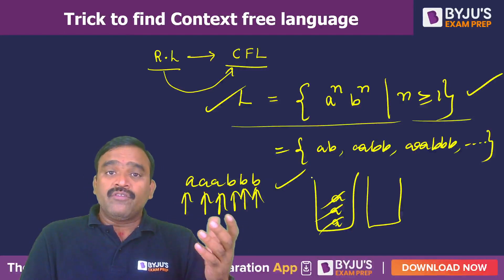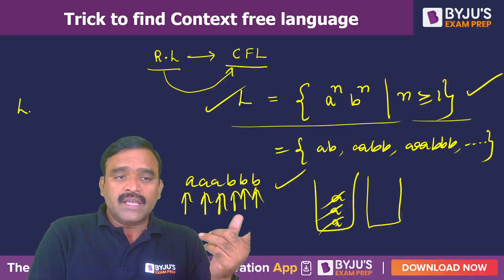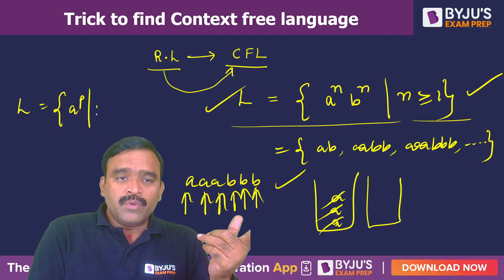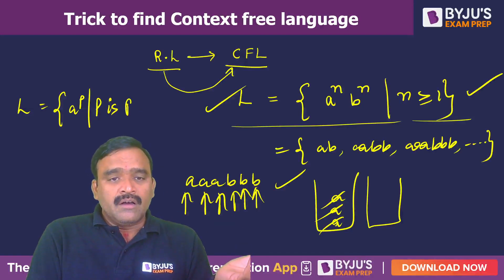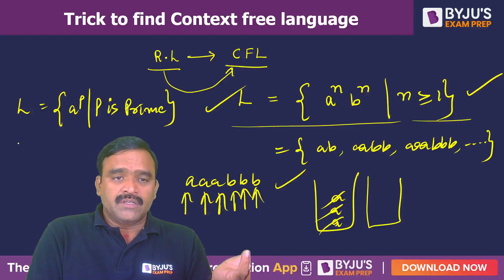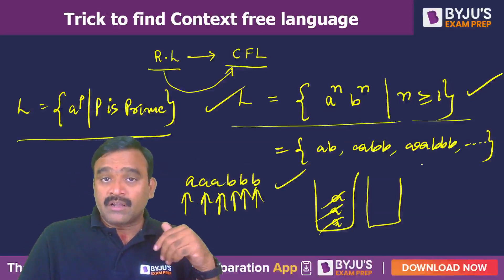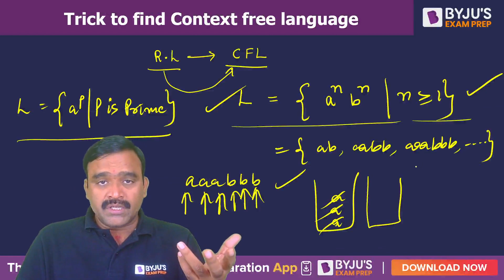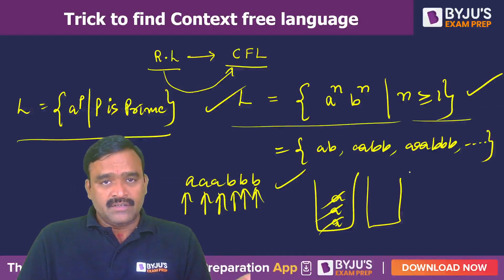Also, if a computation is required — for example, a language like a^p where p is prime — here also computation is required. It is not context-free because a pushdown automaton cannot perform the computation. Finding whether the given number is prime or not requires a lot of computation, so PDA cannot do it, and it is not a context-free language.